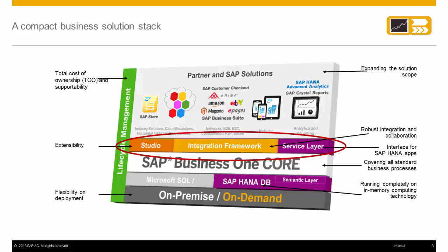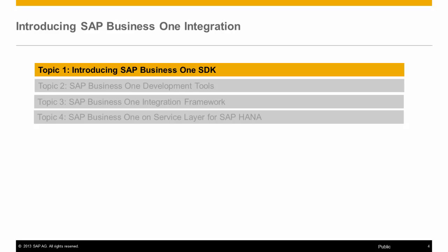We will discuss the extensibility layer from the diagram, consisting of the SAP Business One SDK in-studio, the integration framework, and the service layer.